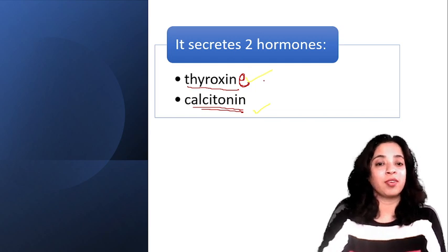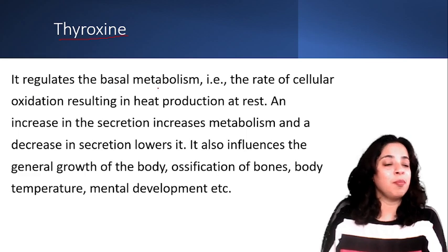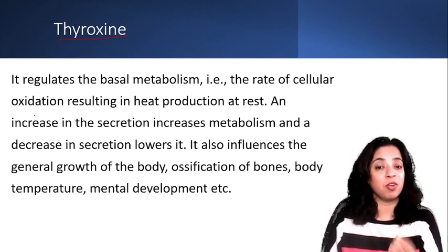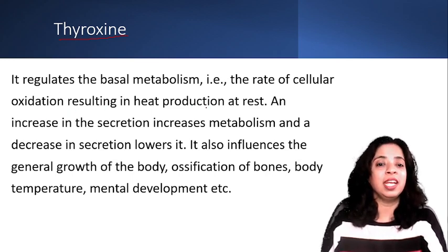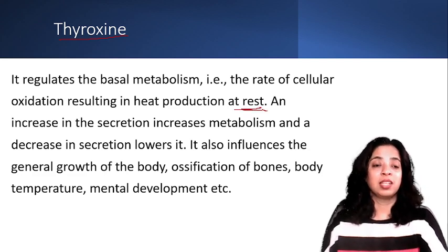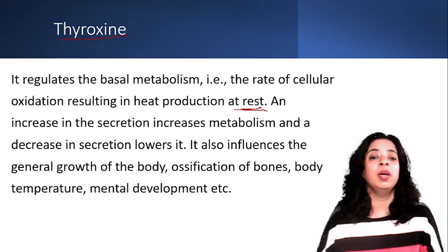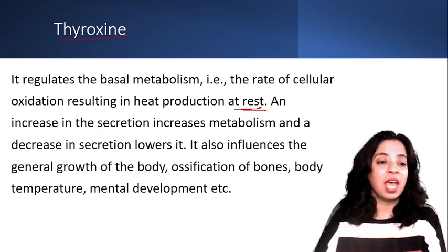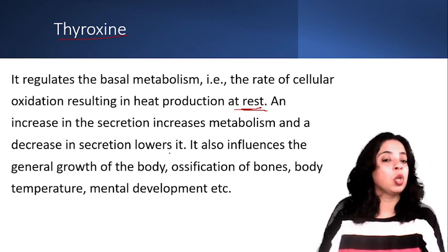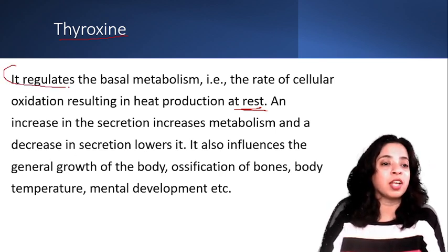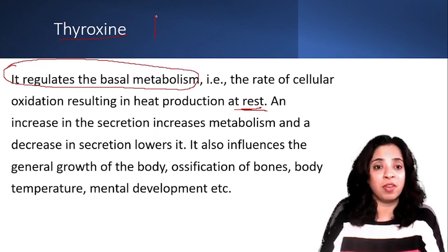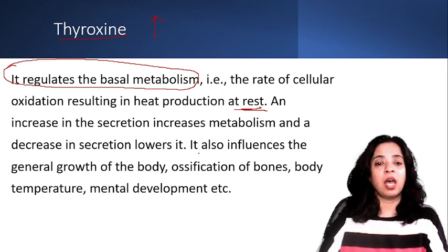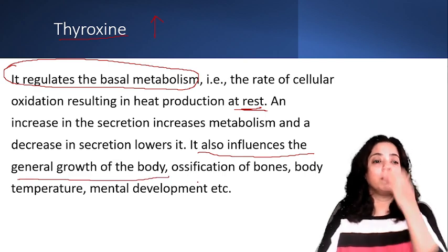Thyroxine regulates the basal metabolism — that is the rate of cellular oxidation, the oxidation that happens in each and every cell. We can call it cellular respiration; the rate of cellular oxidation results in heat production at rest. Thyroxine helps in basal metabolism — that is the cellular oxidation that happens when the body is not working. An increase in secretion increases the metabolism and a decrease in secretion lowers the metabolism.